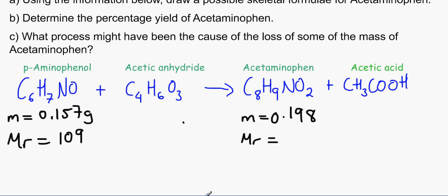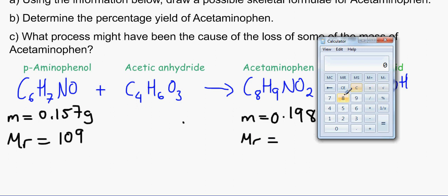With acetaminophen, we've got 0.198 grams. So the mass is 0.198. Again we can find out the MR, which is 12 times 8, which is 96, plus 9 plus 14 plus 32, because 16 times 2 is 32, and that would make 151.